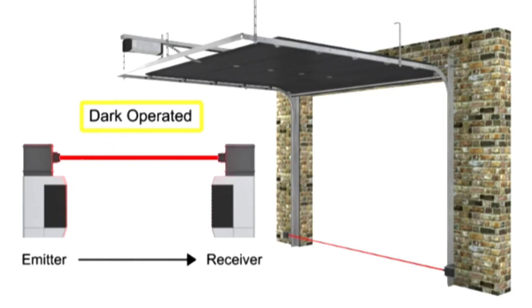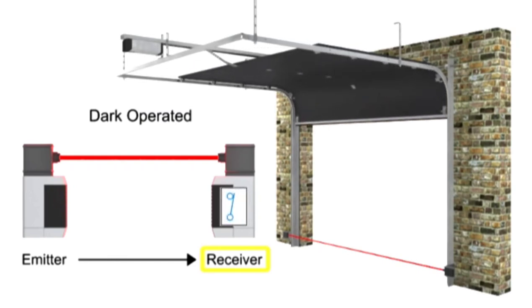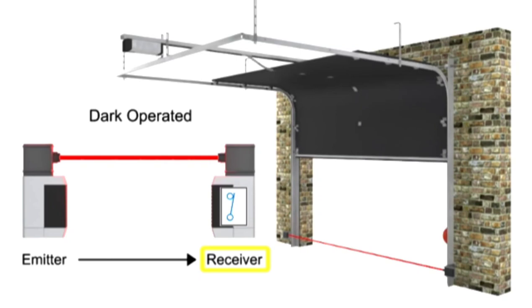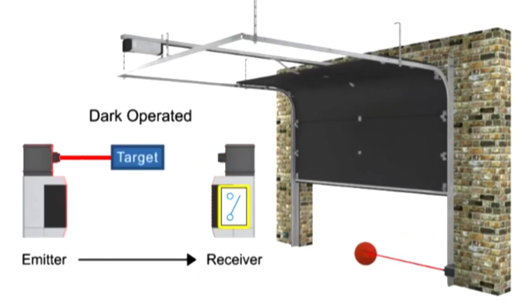In this dark-operated mode example, the beam of light is being received by the garage door receiver. When a target enters the beam of light, it activates the switch which will stop the garage door from closing.